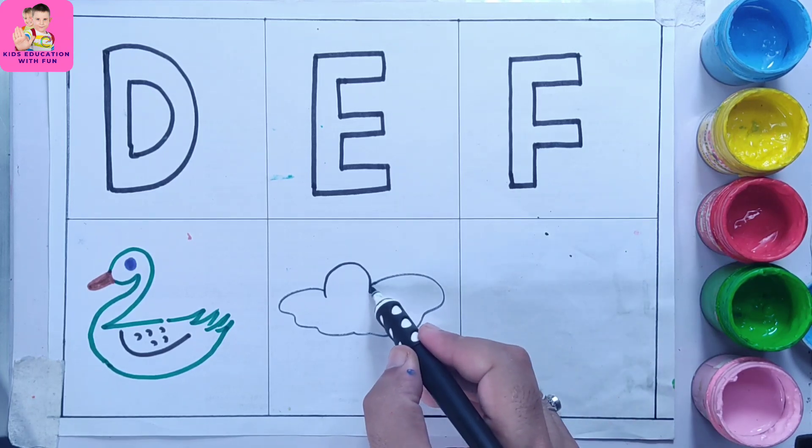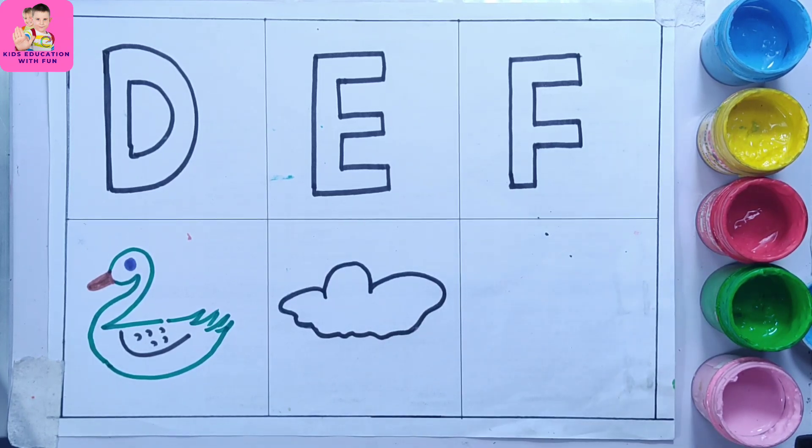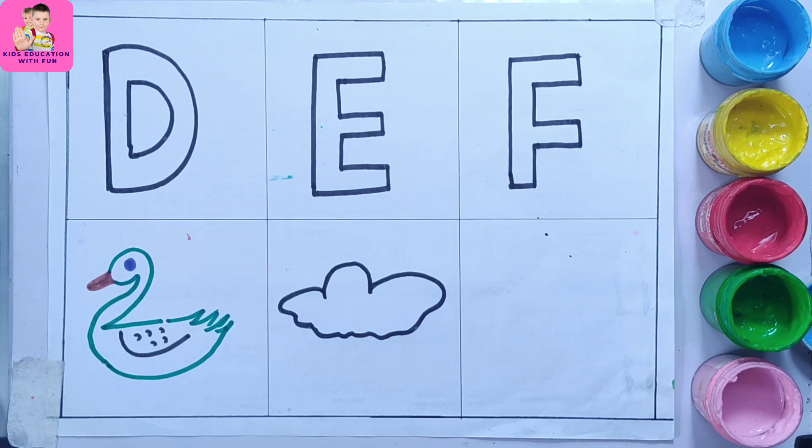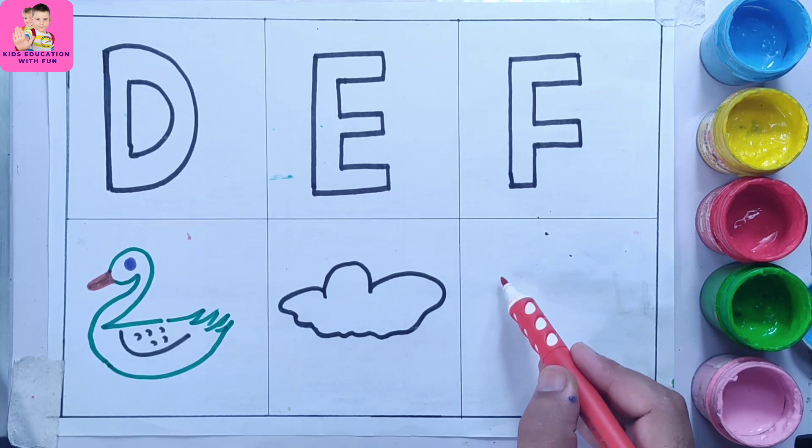E for egg. F for a fish. So let me draw a fish using this red color. So to draw a fish it's super easy.